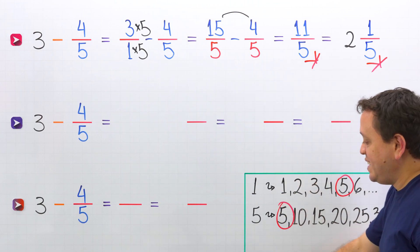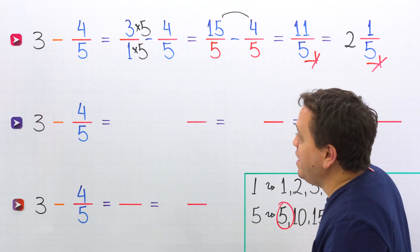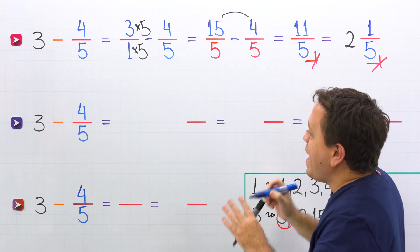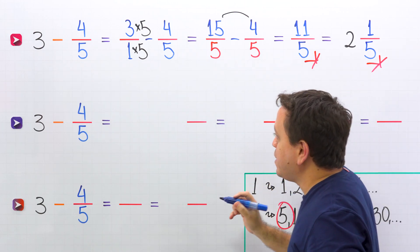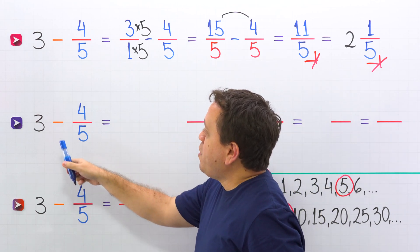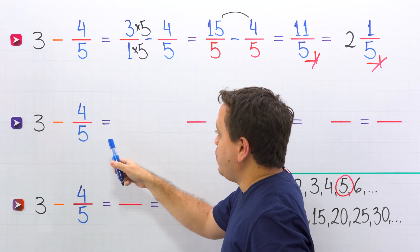Let's continue with the second method. Here comes the mixed number method. I really like this method. Once again, we use the same example: 3 minus 4 fifths.